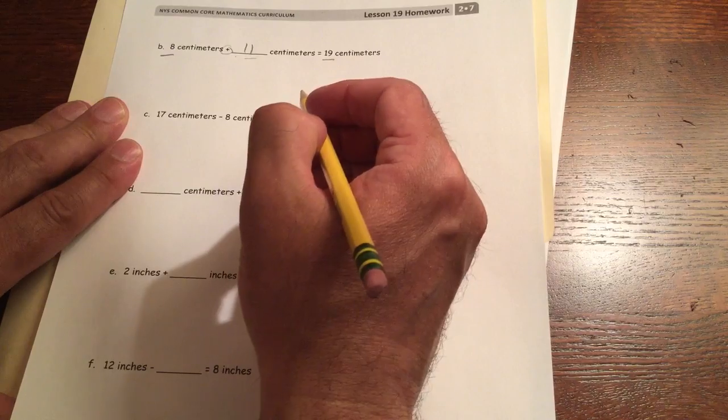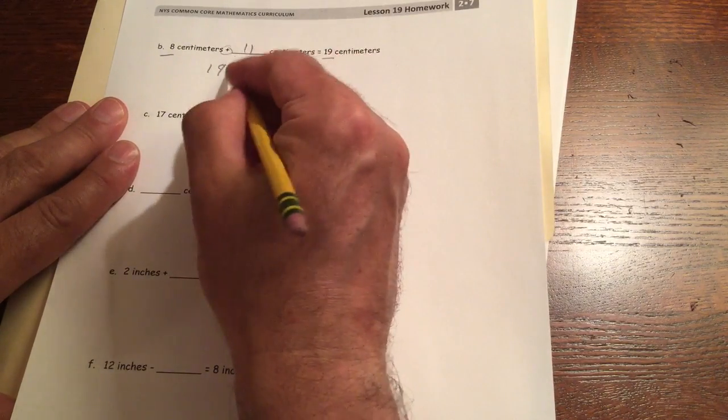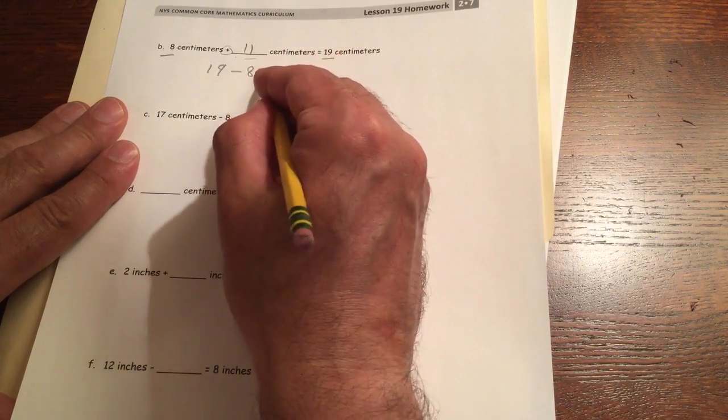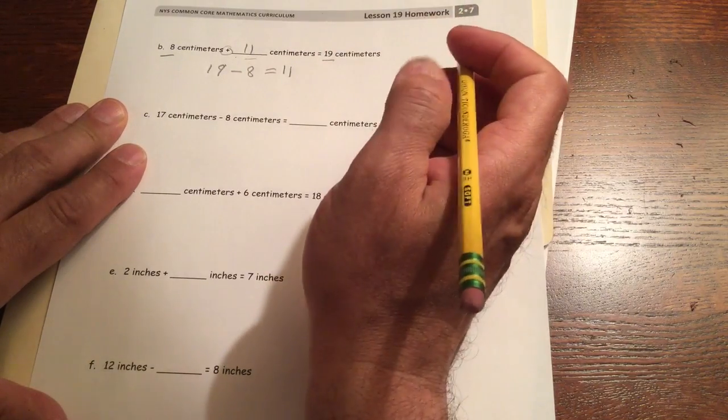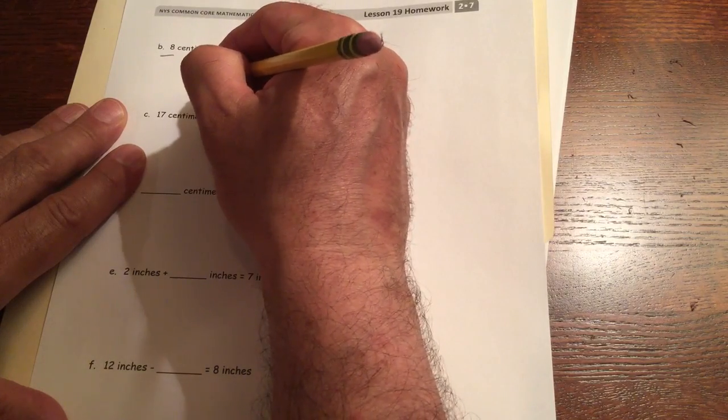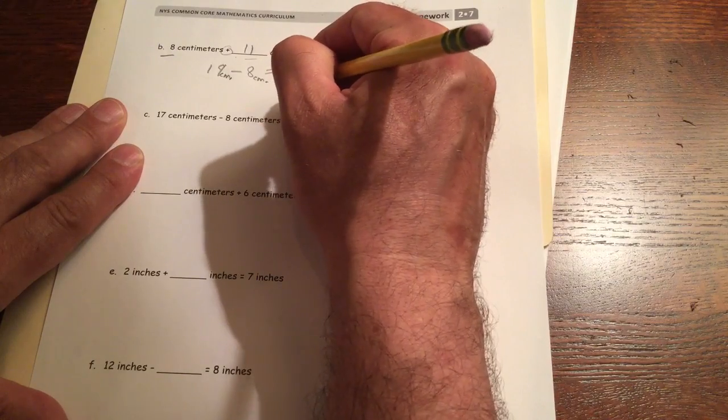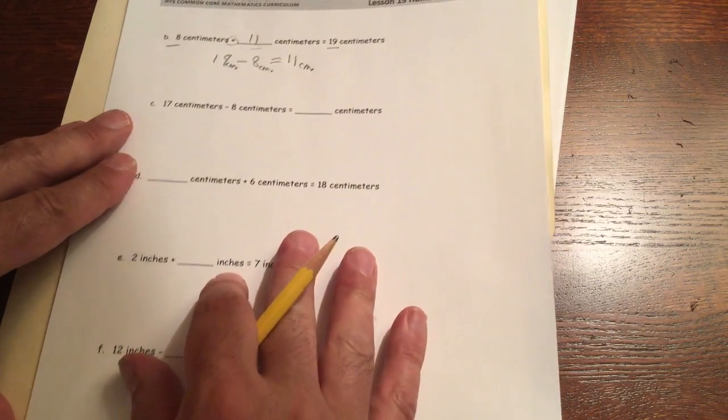And now I have to check this with subtraction. We should start with the minuend should be the largest number. 19 minus 8. That should equal 11. We should do this in centimeters. So let's write our units in there just to be consistent. You don't have to write up the whole word centimeter. You can just write CM for the abbreviation.